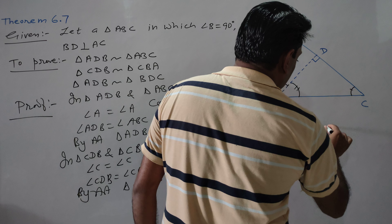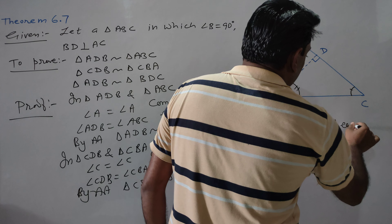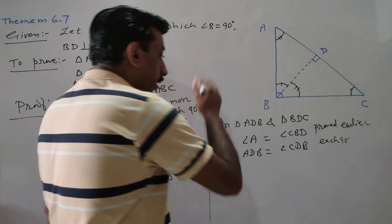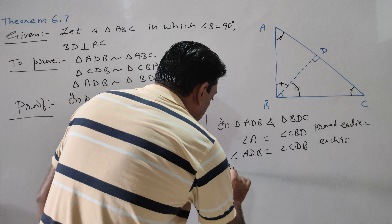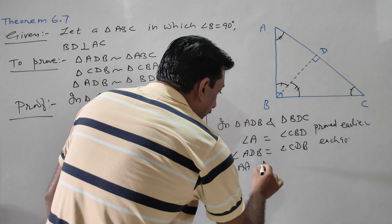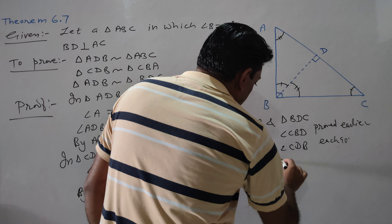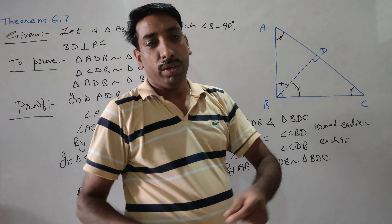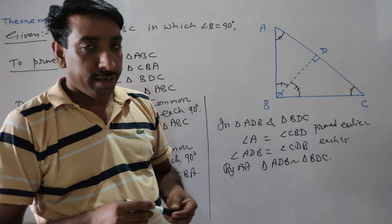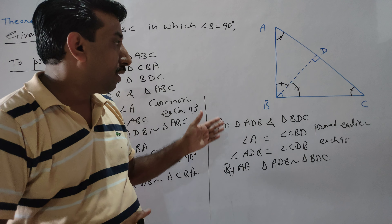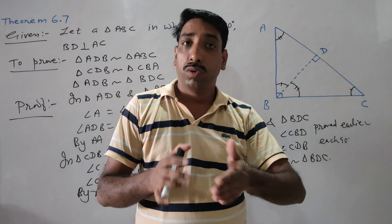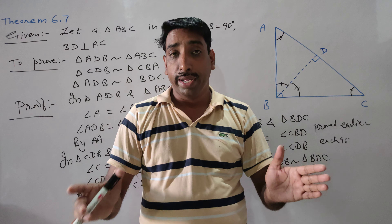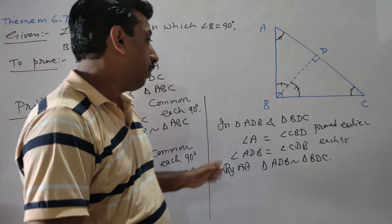So we had a similar triangle which is equal by the Angle-Angle criterion — triangle ABD is similar to triangle BDC. This way we have proved that if we have a right triangle with a right angle vertex to the hypotenuse and a perpendicular, then the two triangles formed are similar to the whole triangle and to each other.